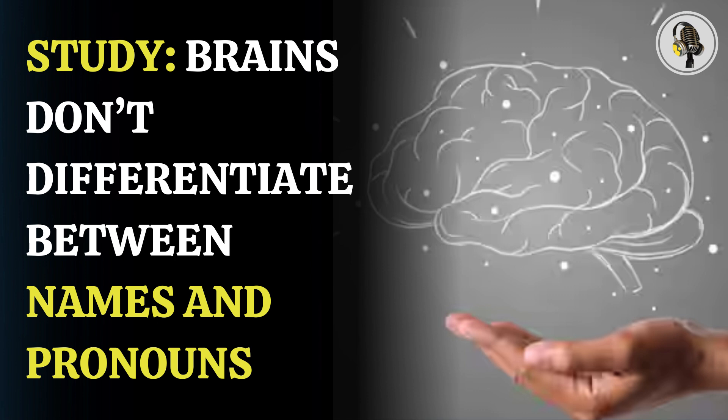In a new study, neuroscientists have found that the brain's same neurons get activated when they hear a person's name or pronouns like he, she, or they.